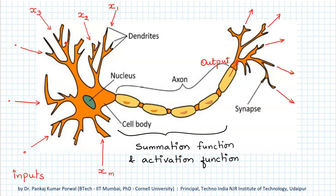If we look at the tentacles, each one of them has different thickness, and that is because each one of them has different strength. What each tentacle does is, whatever input it receives, it either amplifies or reduces that input and sends it to the cell body.